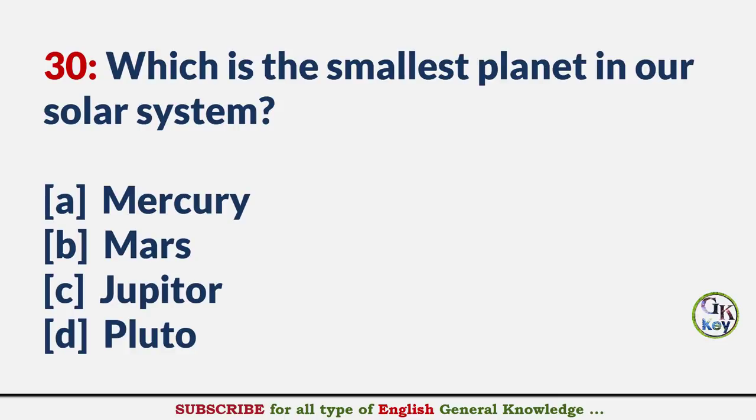Which is the smallest planet in our solar system? Answer A: Mercury.